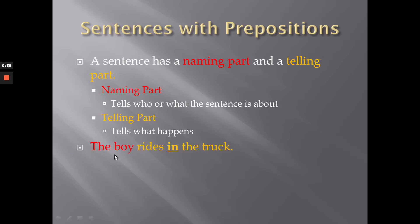So let's look at an example sentence. This sentence says, the boy rides in the truck. So we know that the naming part in red is the boy. That is what the sentence is about. And the telling part is rides in the truck. It tells us what the boy is doing.